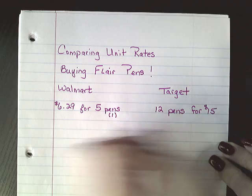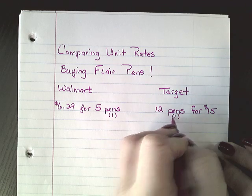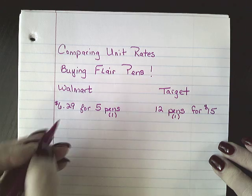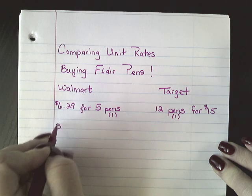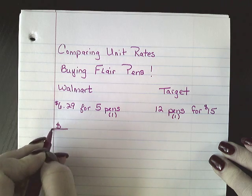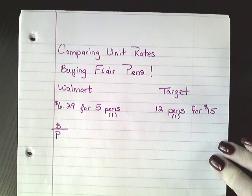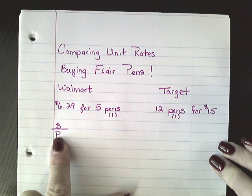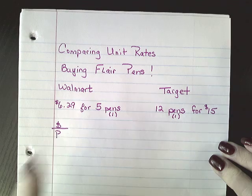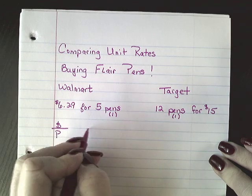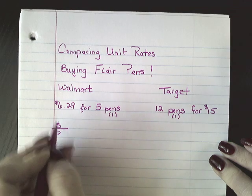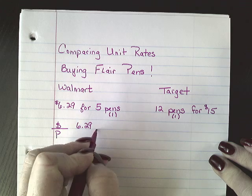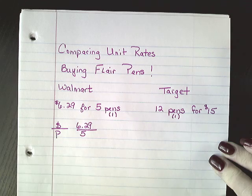I'm going to put one underneath 'pen' because that's going to be the unit rate I'm looking for. I'm going to set it up as money over pens. You will always, always, always set it up with the labeling first. So right now we know it's $6.29 for five pens.